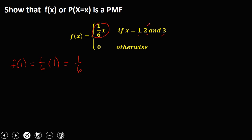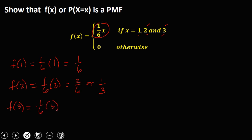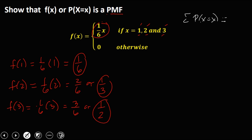Then if x is 2, f(2) is 1 over 6 times 2, which is 2 over 6, or reduced, 1 over 3. Then the last one: if x is 3, we have 1 over 6 times 3, which is 3 over 6, or 1 half. So these are the different probabilities for every value of x.